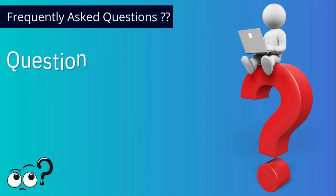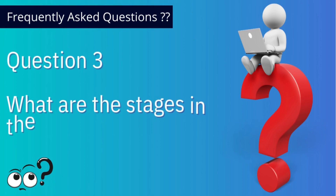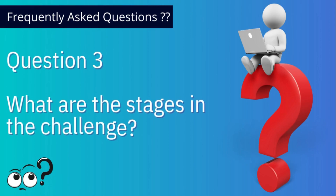The next question is: what are the stages in the challenge? We have divided the entire 75 days challenge into five stages, 15 days each, with five milestones. When you achieve a milestone, you will be given an award.